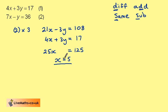We can substitute this back into either original equation. If we use number 1, we get 4 times 5, add 3y is equal to 17.